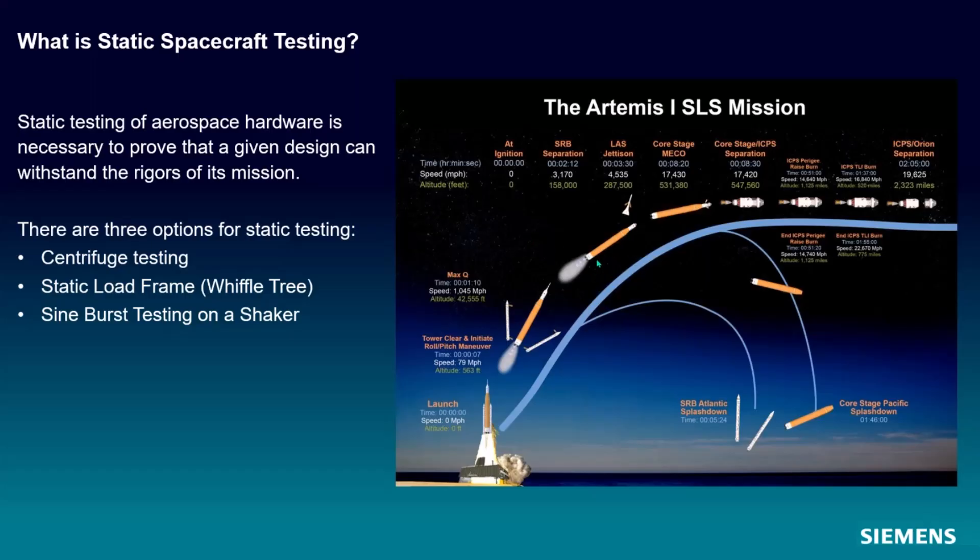To test for these static loads, there's really three options for a spacecraft. You can put this thing on a centrifuge and spin it around, and you'll get a constant acceleration that way. You can use a static load frame, also known as a whiffle tree in some places.